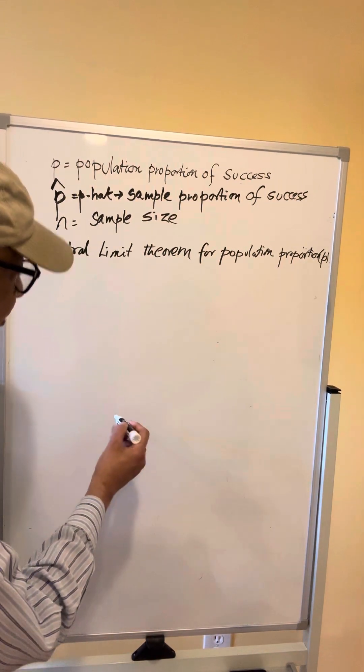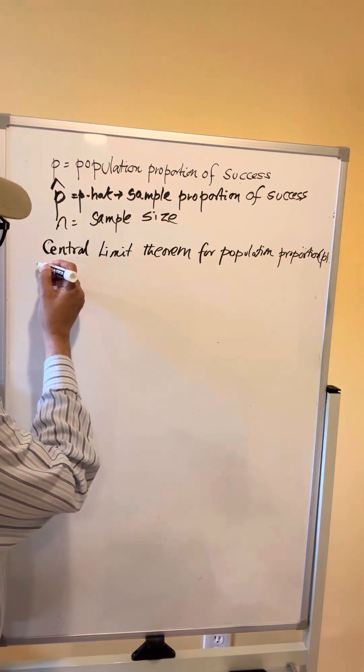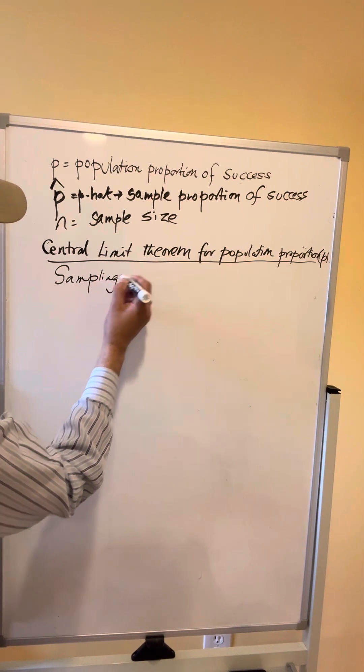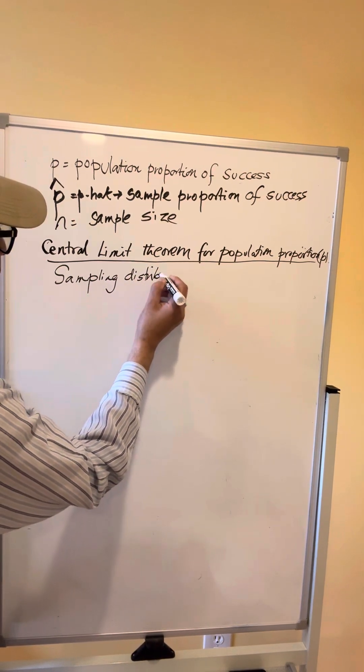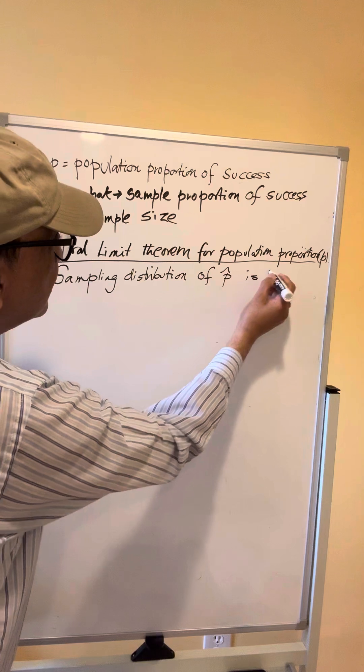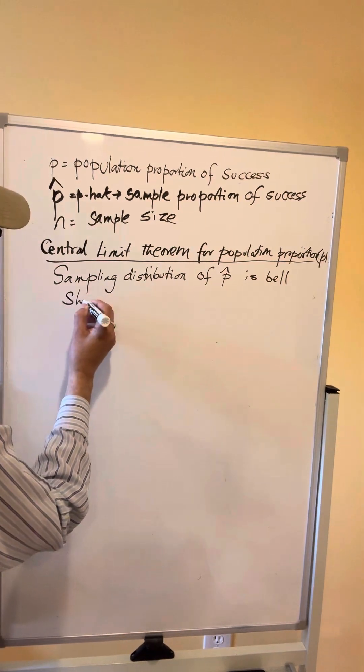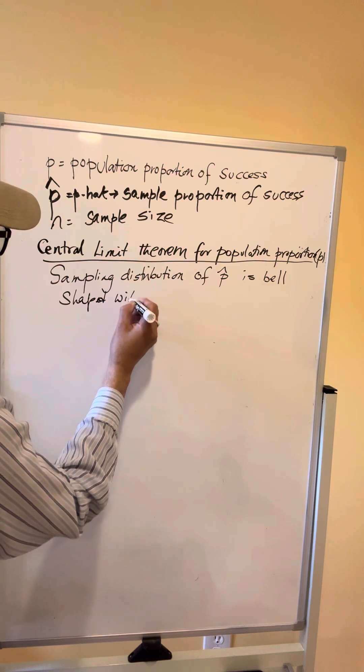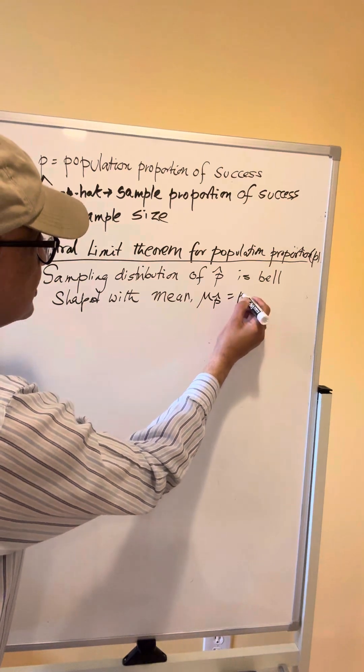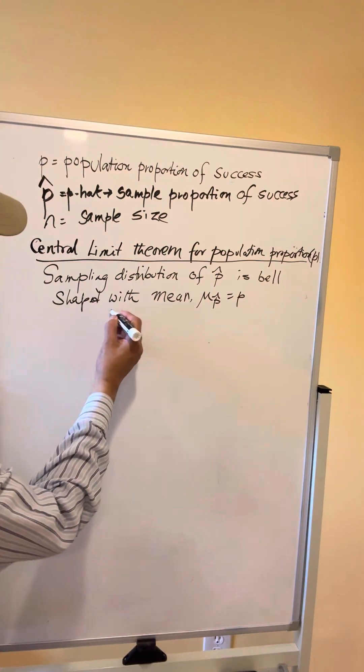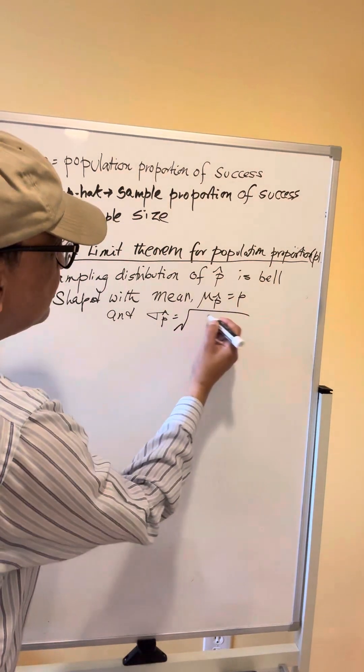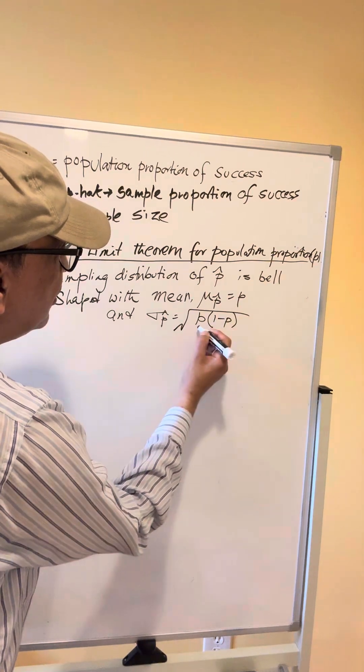So the Central Limit Theorem for population proportion states that the sampling distribution of P hat is bell shaped with mean mu P hat equal to the population proportion P and sigma P hat, the standard deviation, equal to square root of P times (1-P) over N.